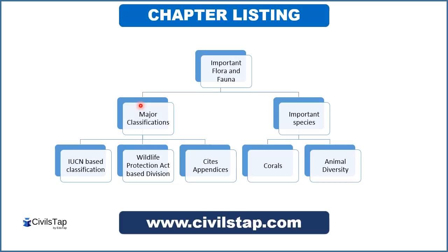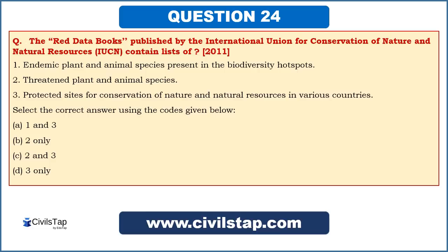Under major classifications, we will study the various acts and organizations that have given classifications to species. The first question for today was asked in prelims of 2011: the Red Data Books published by IUCN, that is the International Union for Conservation of Nature and Natural Resources, contains a list of — first, endemic plants and animal species present in biodiversity hotspots; second, threatened plants and animal species; and third, protected sites for conservation of nature in various countries.